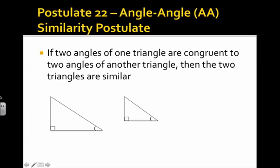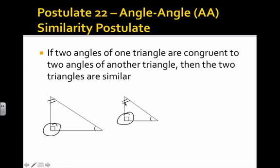We have a postulate — and remember, postulates we don't have to prove, but we will use them in proofs. Postulate 22 is our Angle-Angle Similarity Postulate. It states that if two angles of one triangle are congruent to two angles of another triangle, then the two triangles are similar. For example, we have a right triangle with the right angle marked, and another angle marked congruent. So we know these two triangles are similar. From the Third Angles Theorem, the remaining angle would also be congruent. As long as we have two angles congruent, we know those two triangles are similar.